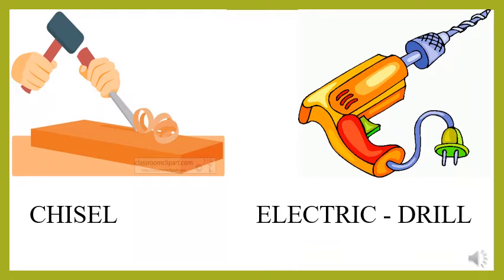Here you can see two more tools — one is chisel and another one is electric drill. A chisel is a cutting tool that is widely used in carpentry, masonry, and other types of construction work. These tools are used to shape, cut, and sharpen materials like wood, cement, bricks, stone, and metal. The electric drill is used to make holes in the wall, on wood, or on metal.